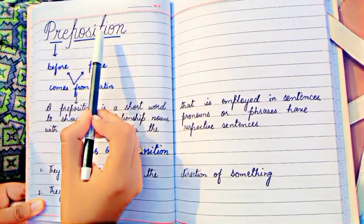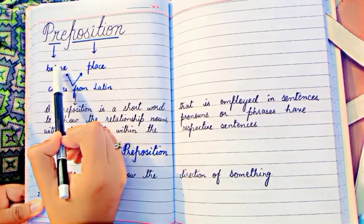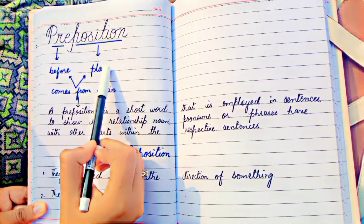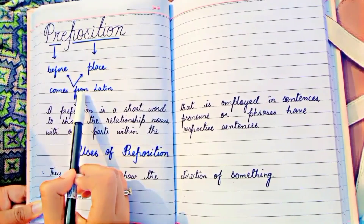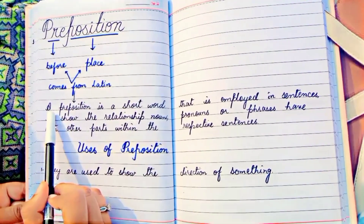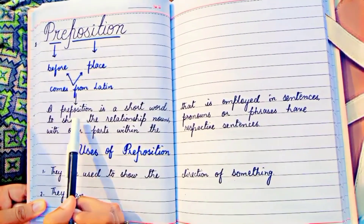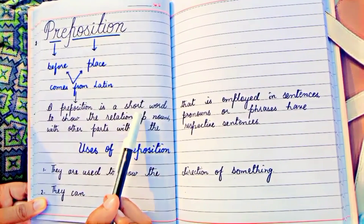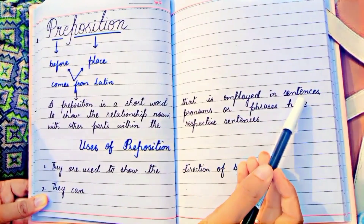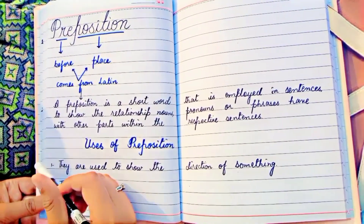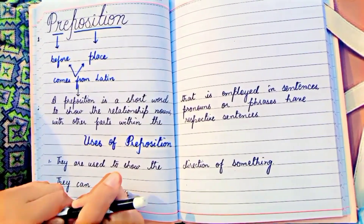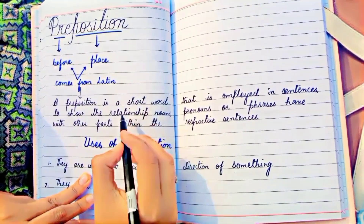Preposition is divided into two words: 'pre' means before, 'position' means place. It comes from a Latin word. A preposition is a short word that is employed in a sentence to show the relationship nouns, pronouns, or phrases have with each part within the respective sentences.